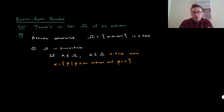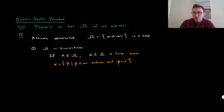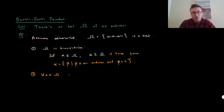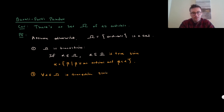The other condition we need to check: in order to prove something's an ordinal, we can show it's transitive and well-ordered by epsilon, or that it's a transitive set of transitive sets. We need to check that for every element of omega, it's transitive. This is true because all of omega's elements are ordinals, and ordinals are transitive by definition.